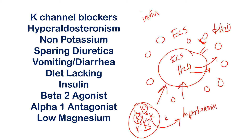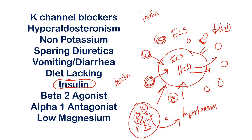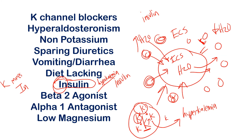In hyperglycemia, the body combats high glucose by releasing insulin. Insulin drives glucose molecules back into the cell, reducing extracellular osmolarity. More water is now outside, so water flows back into the cell — the complete reverse happens and potassium moves back inside, causing hypokalemia. Chronic insulin use can cause hypokalemia, especially in patients with chronic renal failure. A simple mnemonic: look at 'IN' in insulin — potassium moves inside.